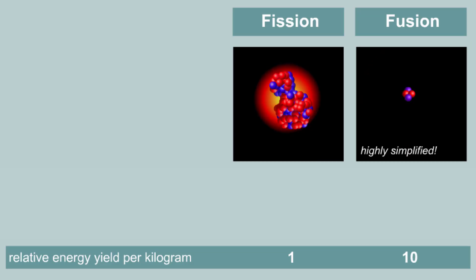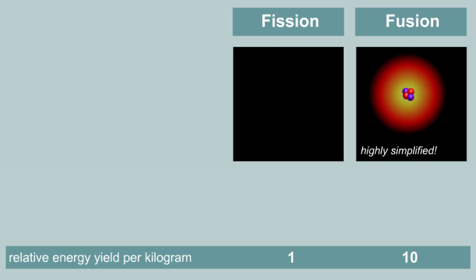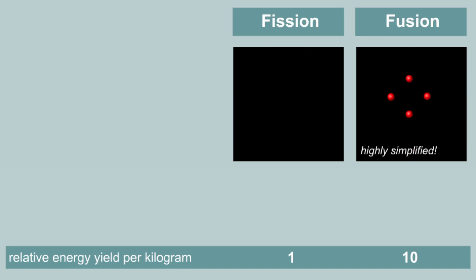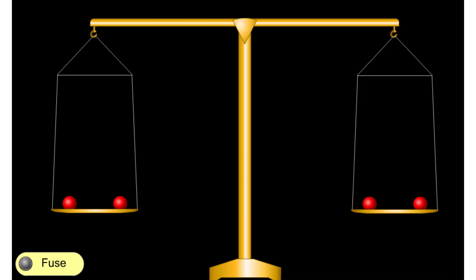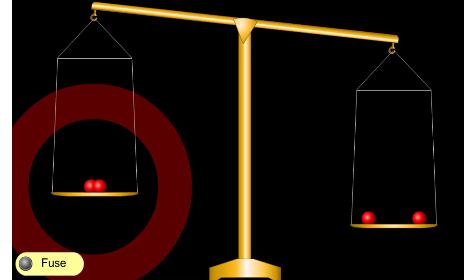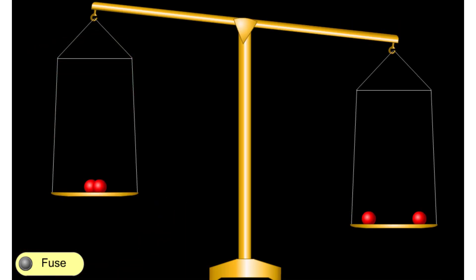When you do get nuclei close enough to fuse, very large amounts of energy is given off, about 10 times as much energy per kilogram as for fission. When two protons fuse together, the resulting nucleus has a slightly lower mass than the two protons when they were separate.